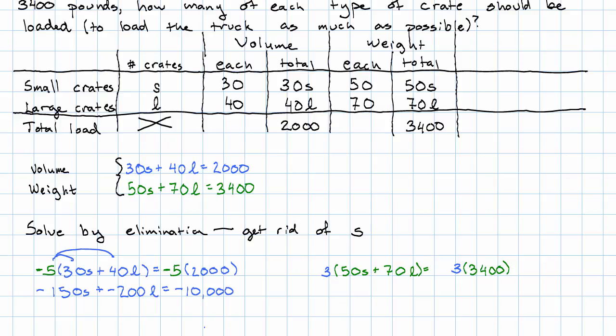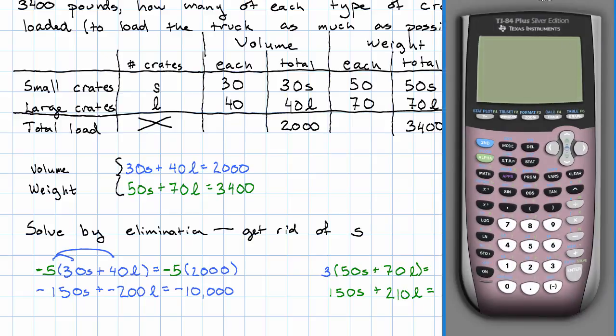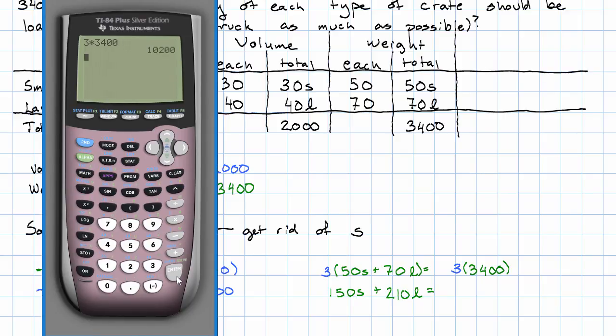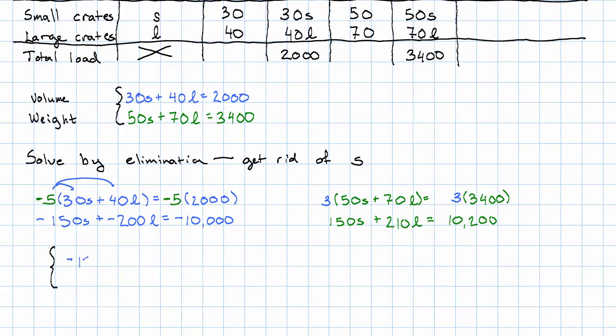You can use your calculator for that arithmetic if you'd like. In the other equation, I'll have positive 150S plus 210L equals, on the calculator now, 3 times 3,400, so 10,200. That's my new system. Negative 150S plus negative 200L equals negative 10,000. Positive 150S plus positive 210L is positive 10,200. Add together the left-hand sides, add together the right-hand sides, and I'm going to get 10L equals 200.